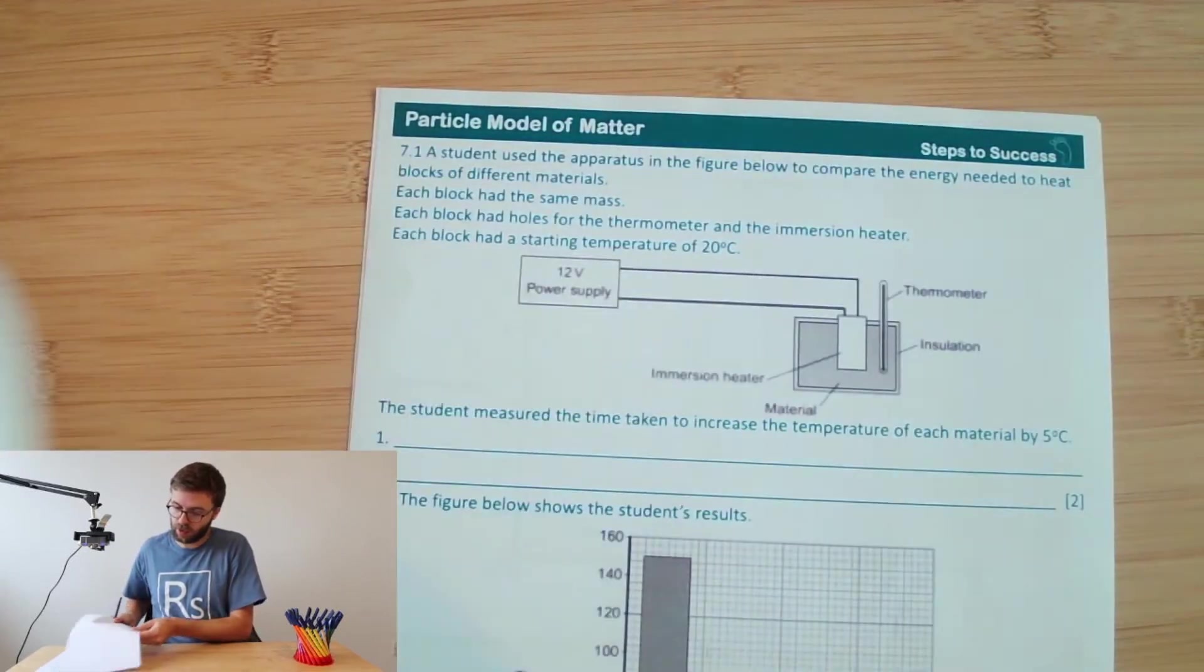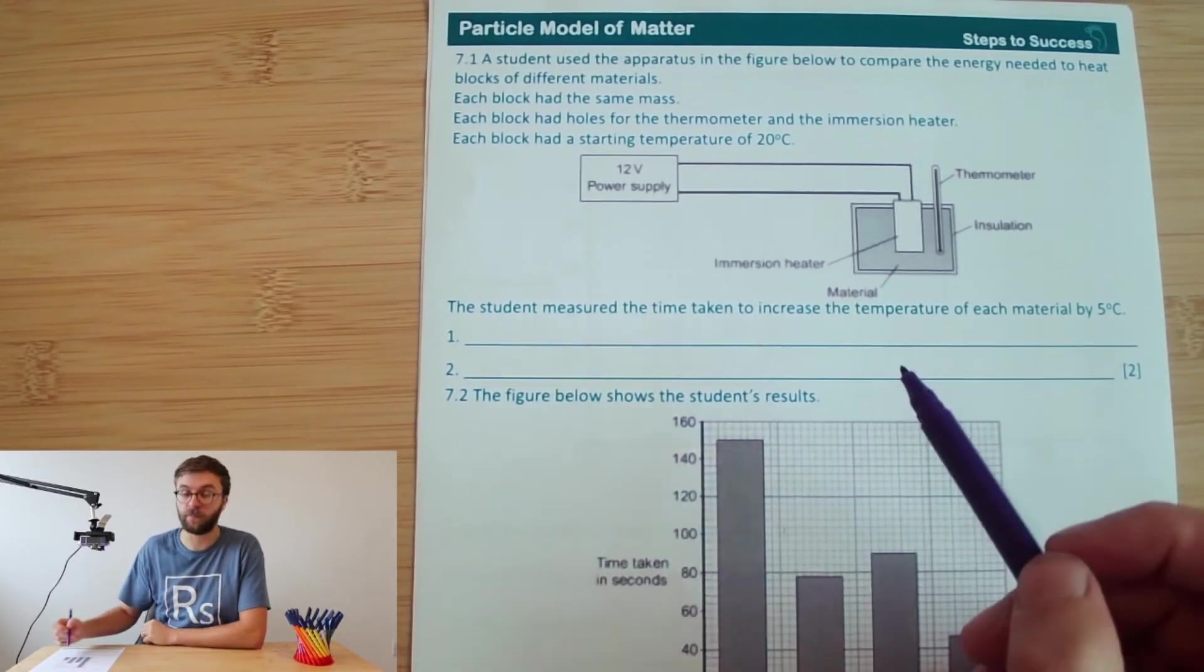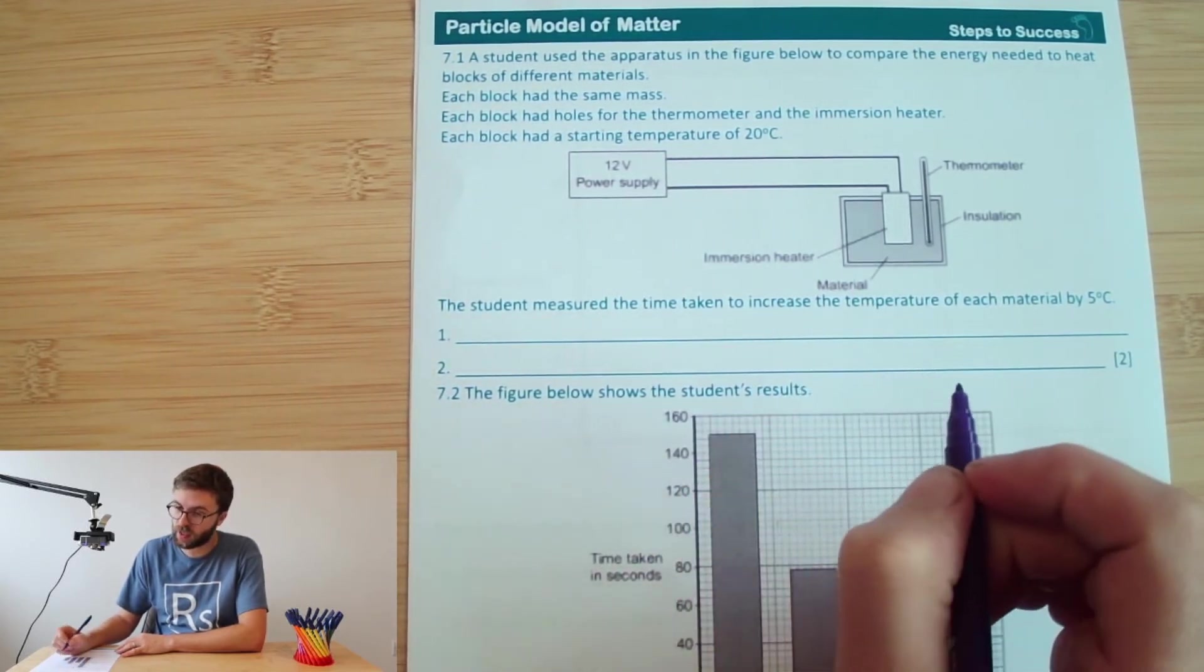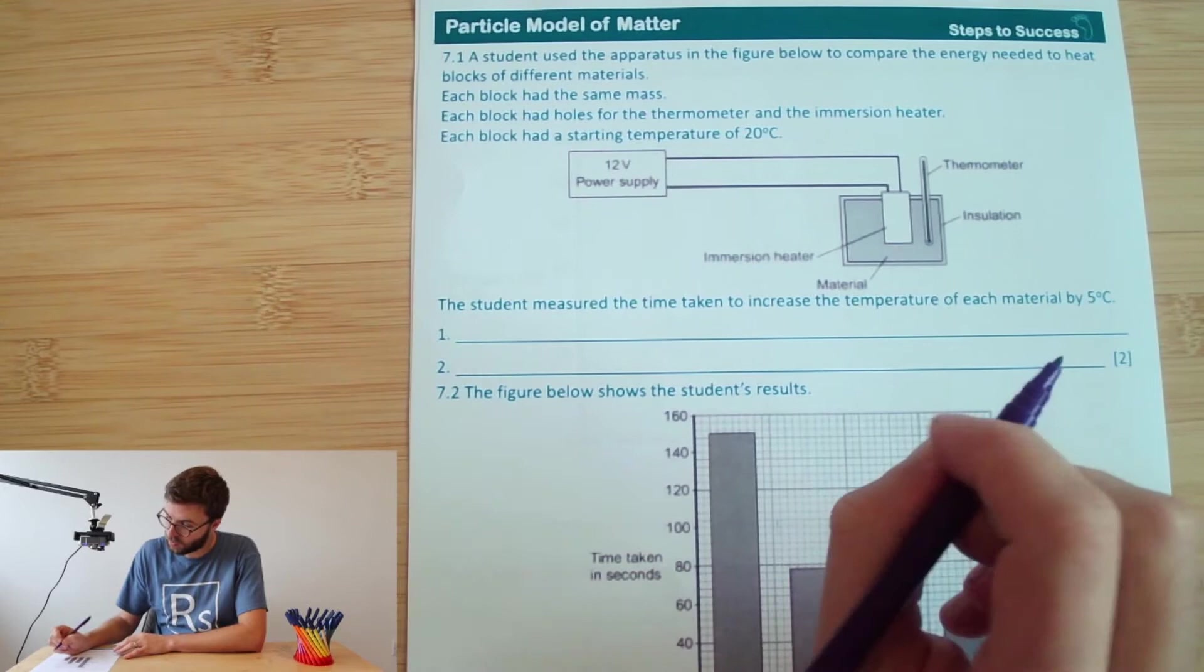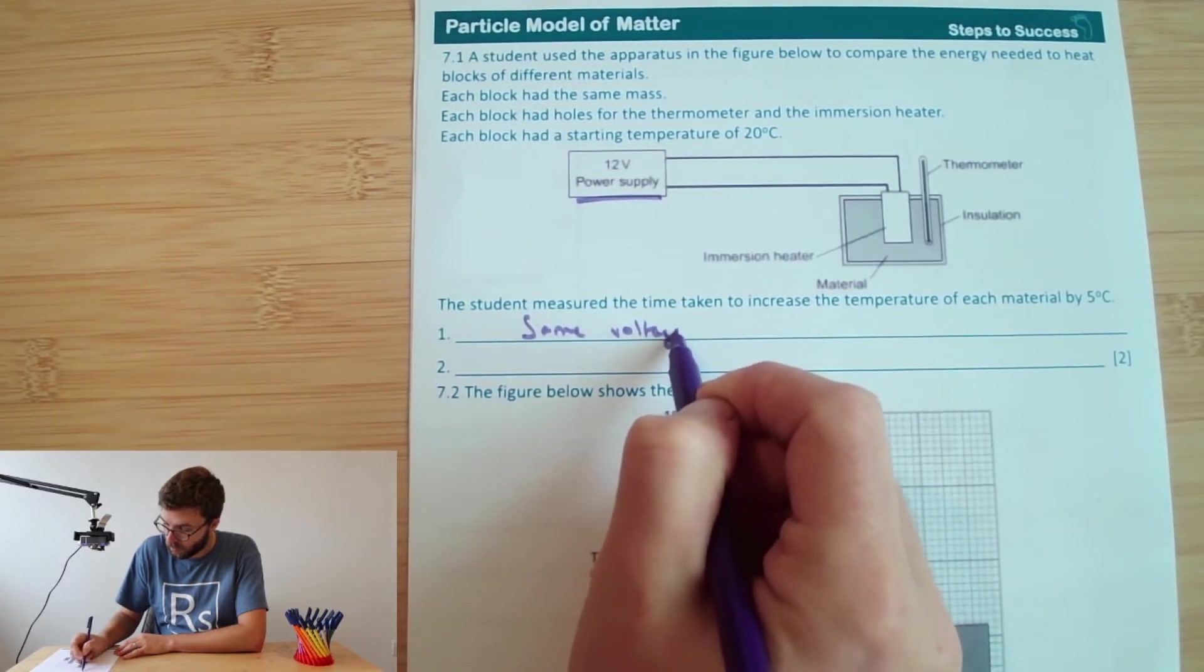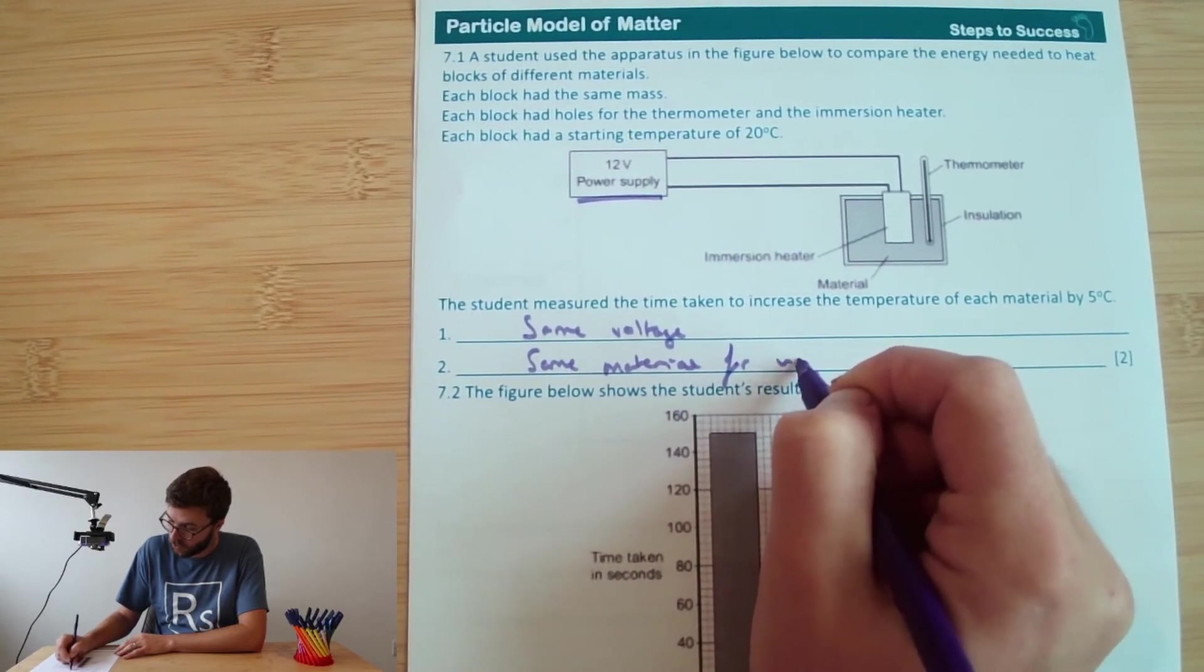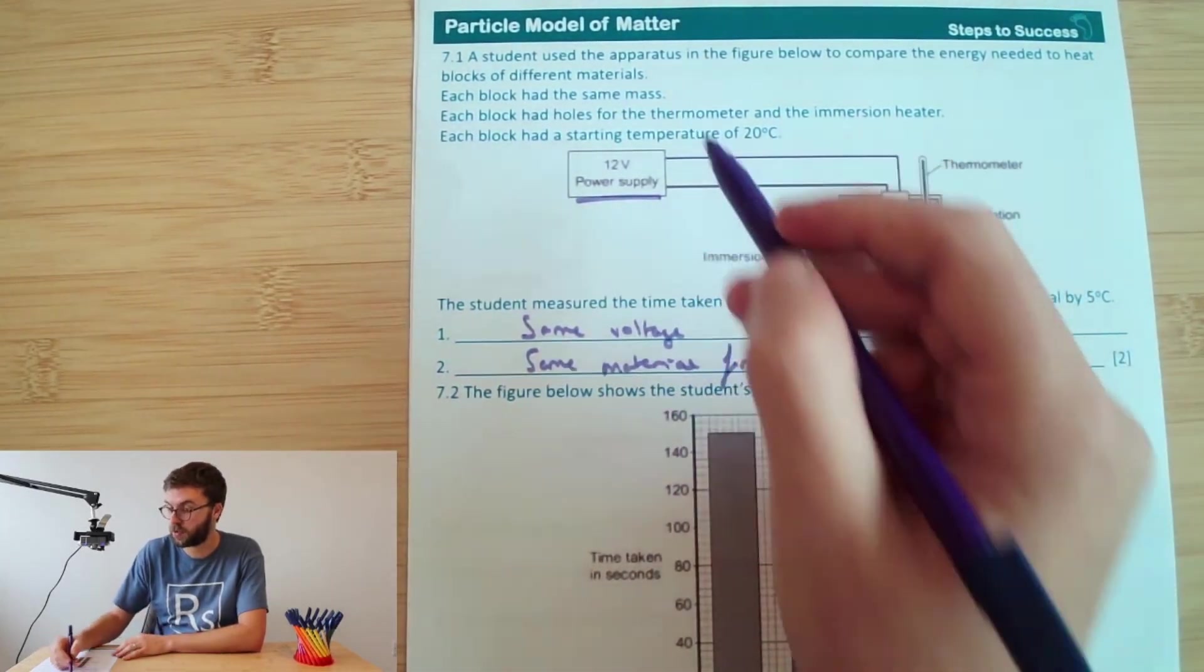Okay, question seven. So a student used the apparatus in the figure below to compare the energy needed to heat different blocks of metal. So they've all got the same mass. They had holes for the thermometer in the immersion heater and they all started at the same temperature of 20 degrees Celsius. The student measured the time taken to increase the temperature of the material by five degrees Celsius. It's like two other variables that the student controlled. So there's loads and loads of things that you could put here. For example, they would need to use the same voltage or the potential difference would need to be the same. They've got insulation around it, so using the same material for insulation. You could also talk about the same thickness of insulation, the same mass, the same starting temperature, which are given up there as well.